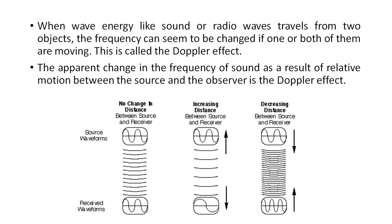Three different conditions are shown in the figure below. In the first condition, when there is no change in distance between the source and the receiver, the received frequency is the same as the source frequency. If the distance is increasing, the frequency observed by the receiver is less than the source frequency. If the distance is decreasing — coming closer — the observer detects a higher frequency compared to the source. There is a direct relationship between the frequency shift and the velocity of motion between the source and observer.